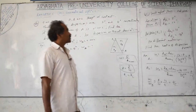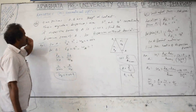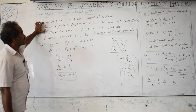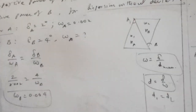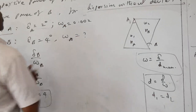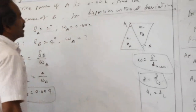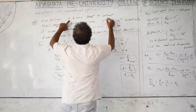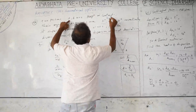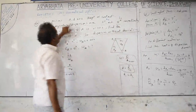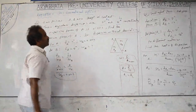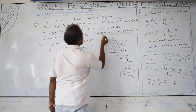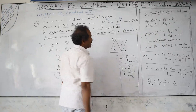Good morning students. Continuing the previous topic on problems related to dispersion in prisms. Question 56: two prisms A and B are kept in contact. Their angular dispersions delta_1 and delta_2 are given as 2 degrees and 4 degrees respectively. The dispersive powers omega — note that omega has no units — omega_A is 0.002.